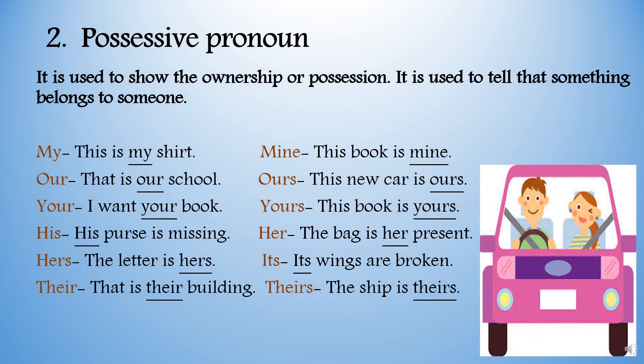Possessive pronouns. They are used to show ownership or position — to tell that something belongs to someone. Examples: This is my shirt. This book is mine. That is your book. This new car is ours. I want your book. This book is yours. His purse is missing. The bag is her present. The letter is hers. Its wings are broken. That is their building. The ship is theirs.